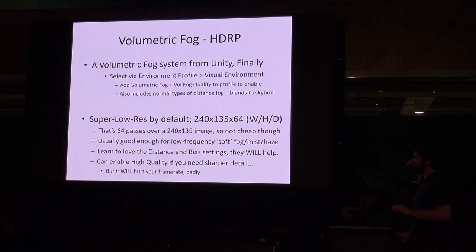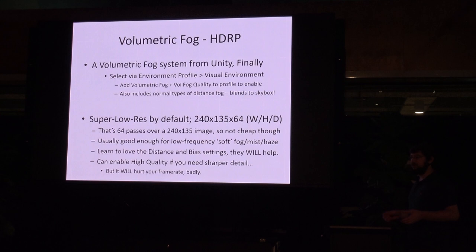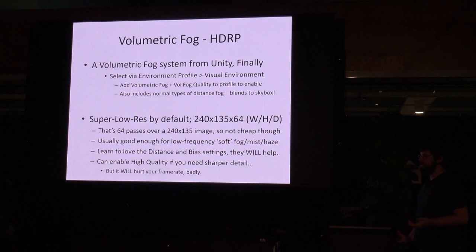By default, it's a very low resolution: 240×135×64. If you do the math, that's the same number of pixels as a 1080p screen — 1920×1080. So if you think it's low resolution and therefore cheap, it's not — it's effectively a full screen pass in terms of pixel samples. If you're doing soft, low-frequency fog and don't need super accurate god rays, that's going to be enough. If you need accurate god rays as they come through trees, you'll have to select the high quality setting, which does hurt performance badly. The quality setting is enabled in a profile, so you can toggle it on and off as you go through the game with a bit of script.